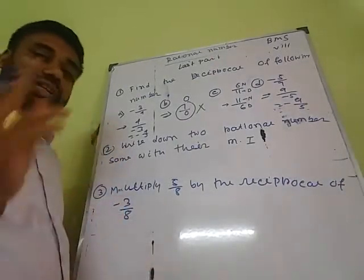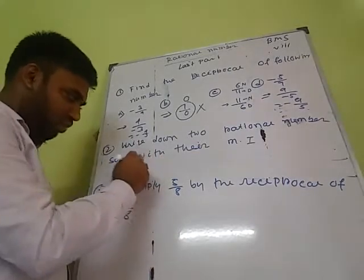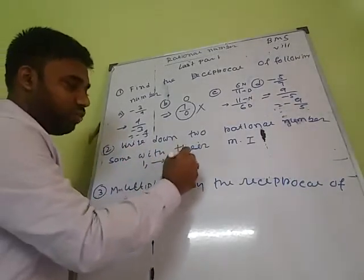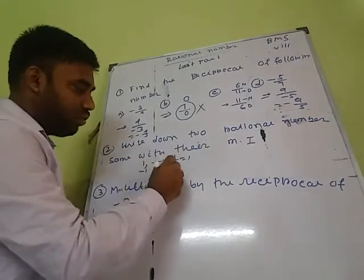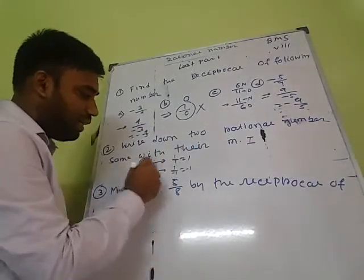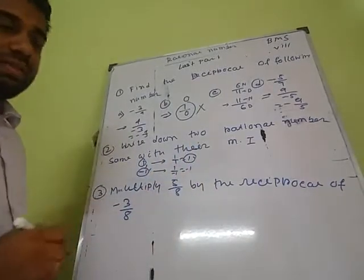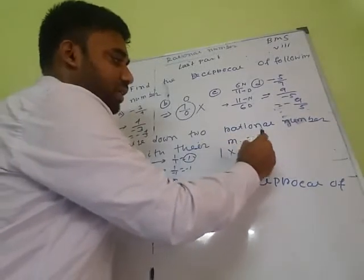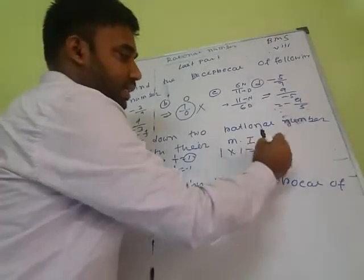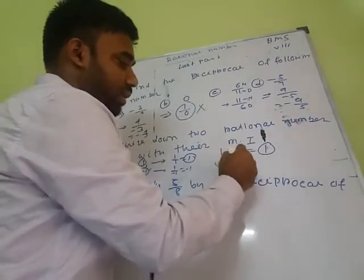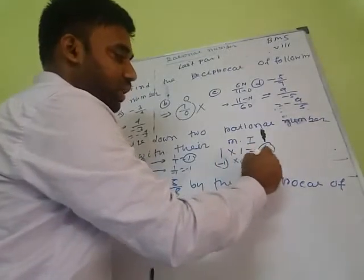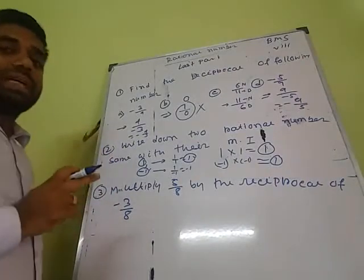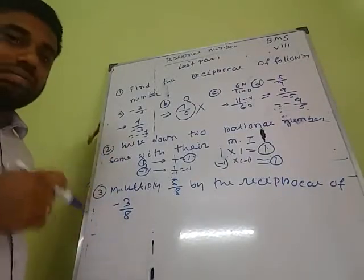There are two numbers that are equal to their own multiplicative inverse. The first one is 1: the multiplicative inverse of 1 is 1 by 1, which equals 1. The second is minus 1: the multiplicative inverse of minus 1 is 1 by minus 1, which equals minus 1. So the two numbers equal to their multiplicative inverse are 1 and minus 1.